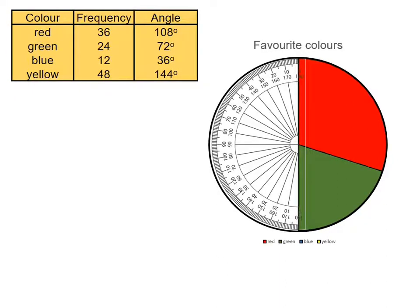Again, putting the protractor here. We need now to do 36. So again, on the inside, 36. Putting a little mark here. Drawing in the sector.